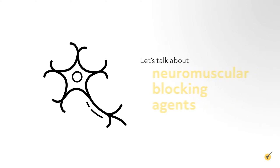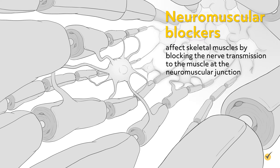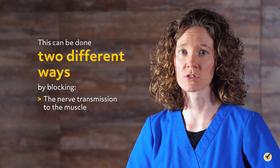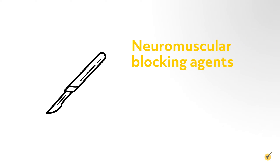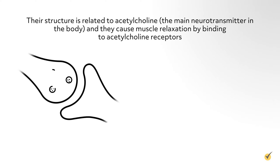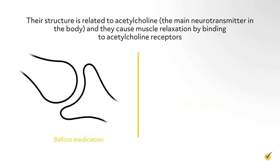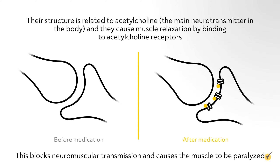Let's talk about neuromuscular blocking agents first. Neuromuscular blockers affect skeletal muscles by blocking the nerve transmission to the muscle at the neuromuscular junction. This can be done two different ways: by blocking the nerve transmission to the muscle or nerve reception of the muscle. Their structure is related to acetylcholine, the main neurotransmitter in the body, and they cause muscle relaxation by binding to acetylcholine receptors, blocking neuromuscular transmission and causing the muscle to be paralyzed.